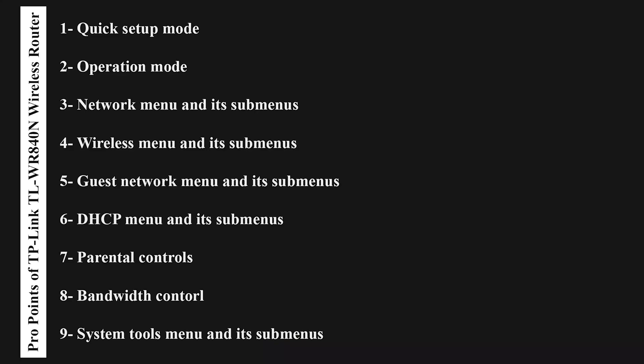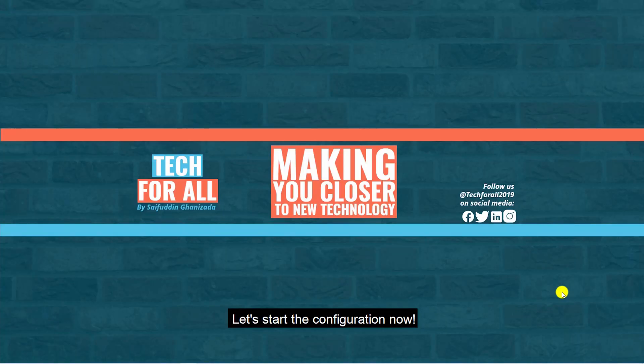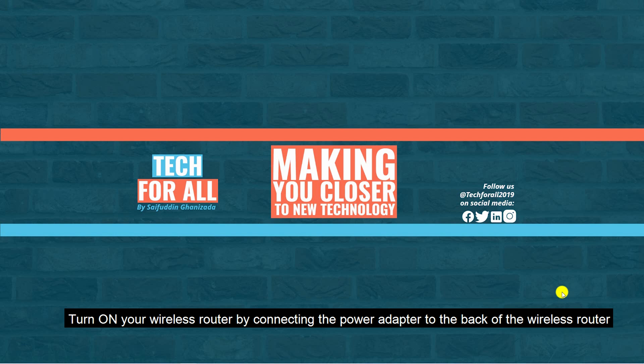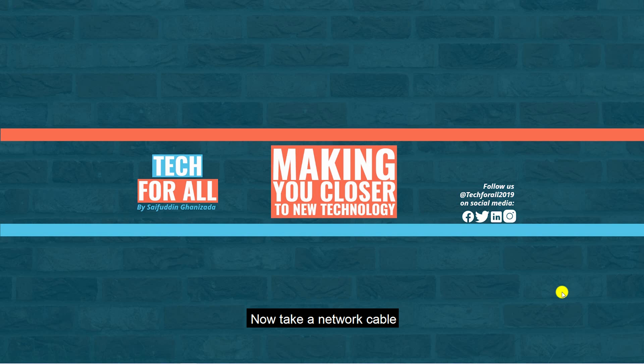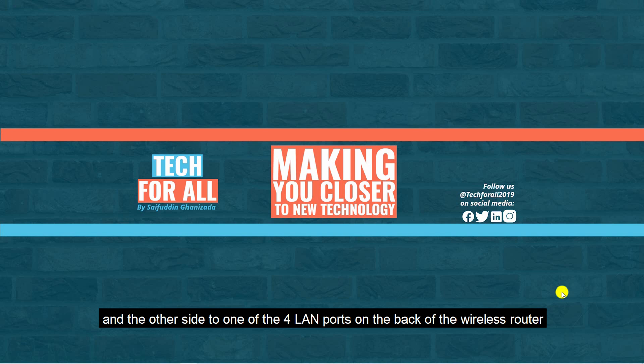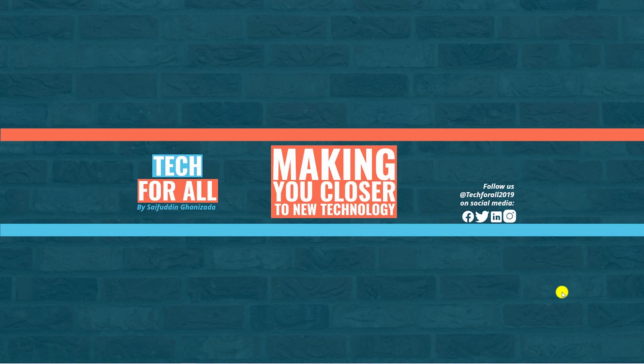Let's start the configuration now. First of all, turn on your wireless router by connecting the power adapter to the back of the wireless router. Now take a network cable, plug one side to your PC and the other side to one of the four LAN ports on the back of the wireless router.